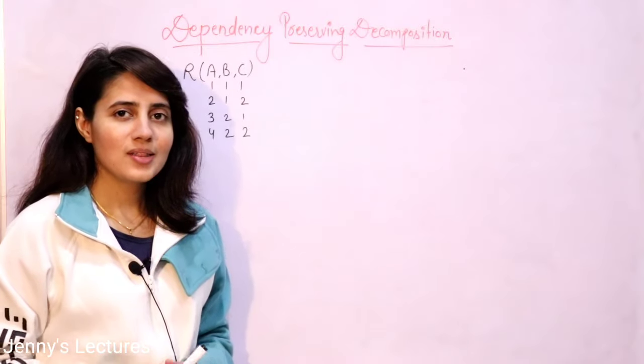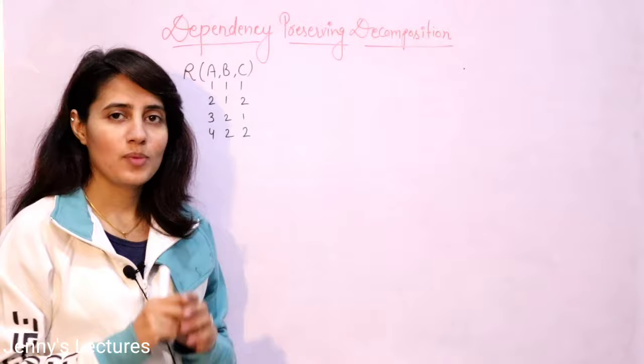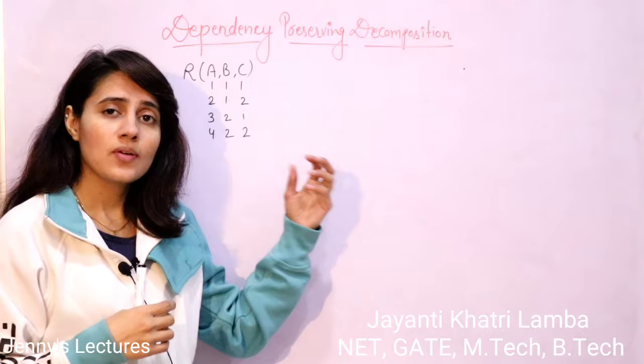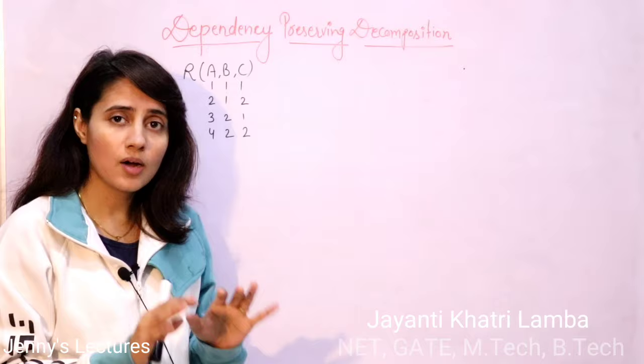So far in this lecture series of DBMS, we have already discussed about normalization, all the normal forms — first, second, third, and BCNF — all the rules and regulations of those normal forms and how to identify that a particular given relation is in a desired normal form or not. But we haven't discussed how to convert a given relation into a desired normal form.